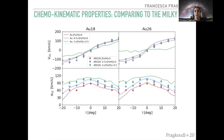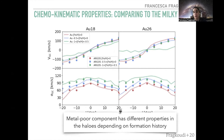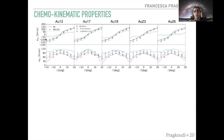If we look at another halo, Auriga 26, the metal-poor population is rotating much more slowly than the metal-rich population, even though it again has higher velocity dispersion. This tells us that the metal-poor component has very different chemokinematic properties depending on the formation history of each halo. Of the five halos we explored, Auriga 17 and Auriga 18 are most similar to the Milky Way, in that the metal-poor population has very similar rotation to the metal-rich populations — which is what the Milky Way also exhibits.